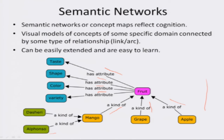It is easy to see that concept maps can be visualized as a collection of object-attribute-value triplets. For example: Sherry has attribute 'a kind of' with value mango; Alfonso has attribute 'a kind of' with value mango; mango has attribute 'a kind of' with value fruit; grape has attribute 'a kind of' with value fruit; apple has attribute 'a kind of' with value fruit — and the same goes for other relationships as well.